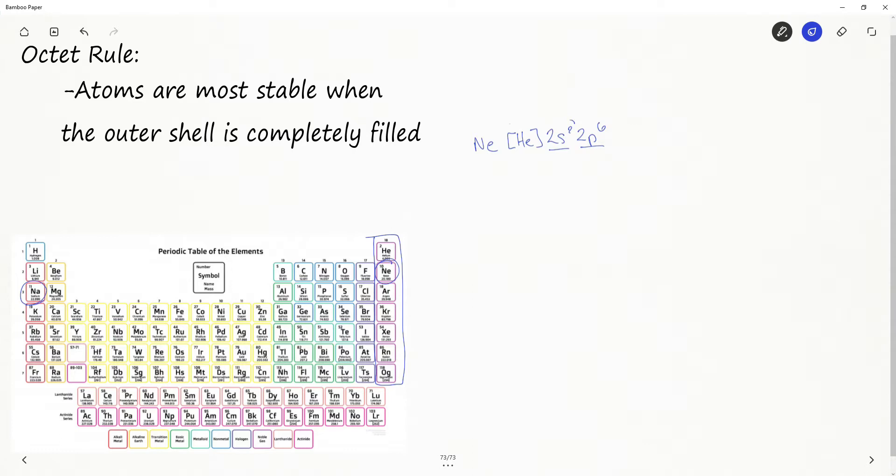It has 2 plus 6, 8 valence electrons. You can see where this is going. The octet rule is called octet for a reason. It means you have eight valence electrons. But let's take a look at another noble gas and see if it also has eight valence electrons.